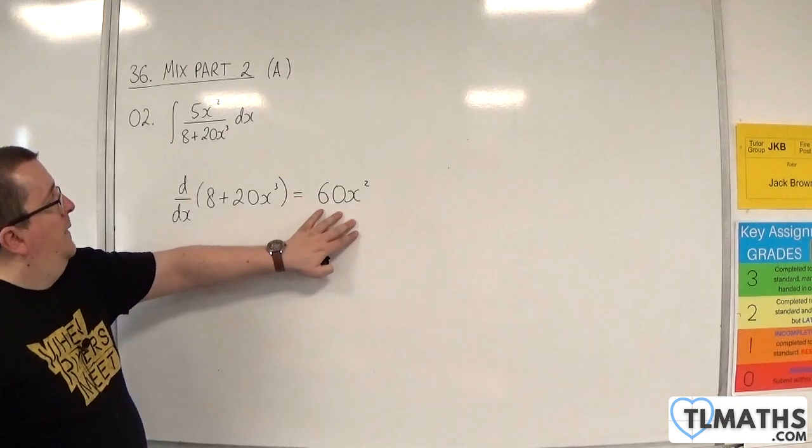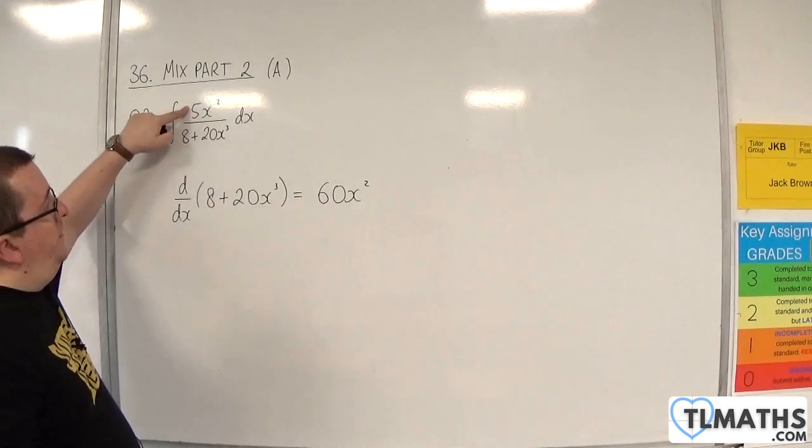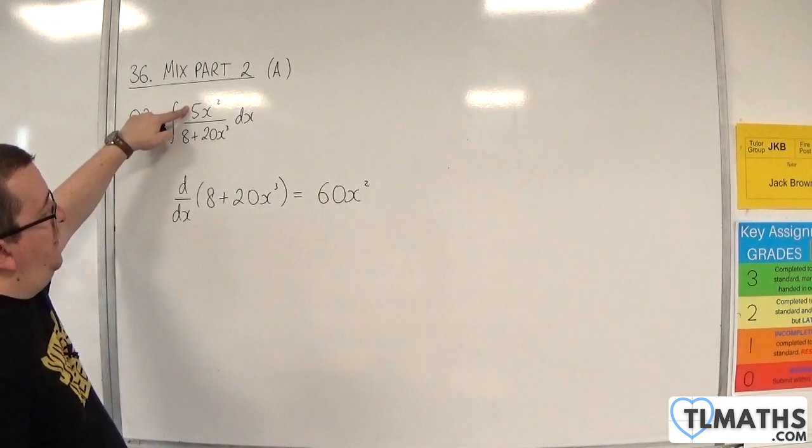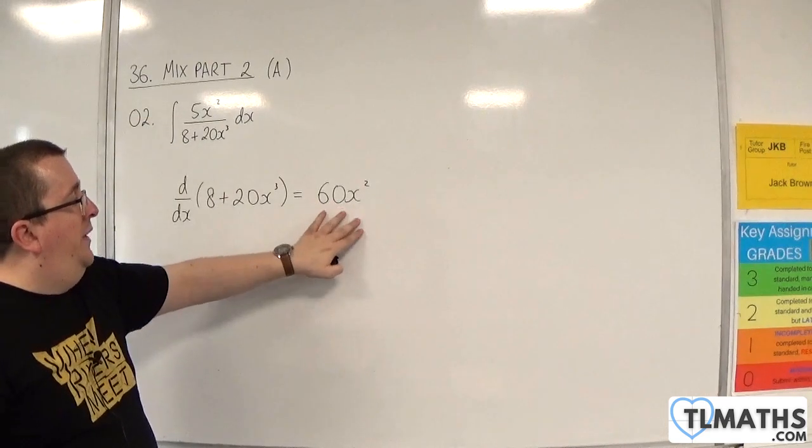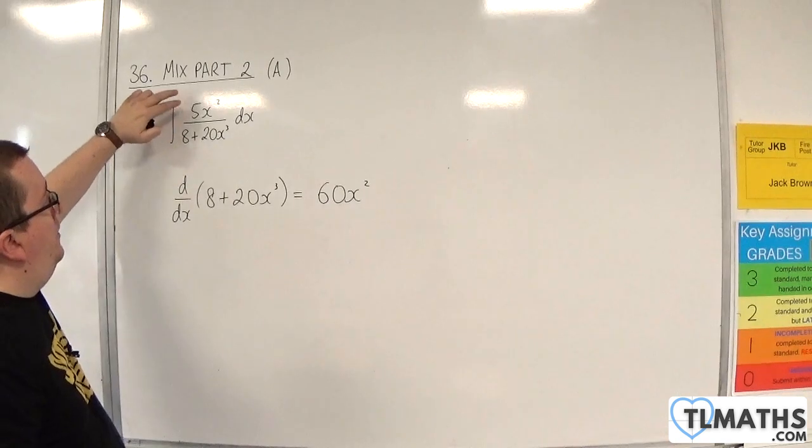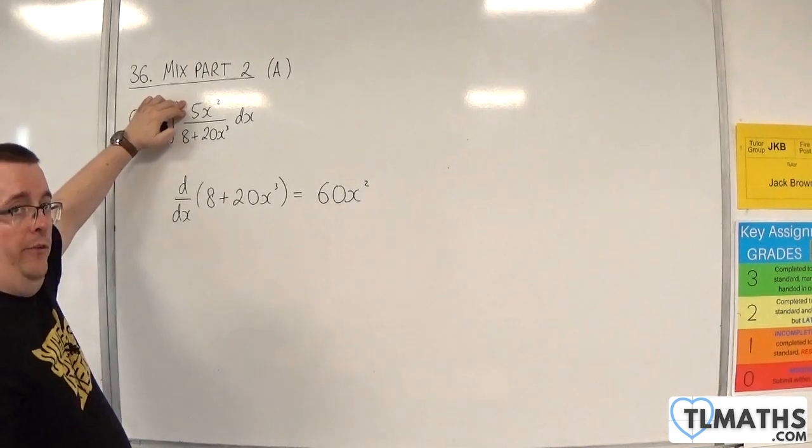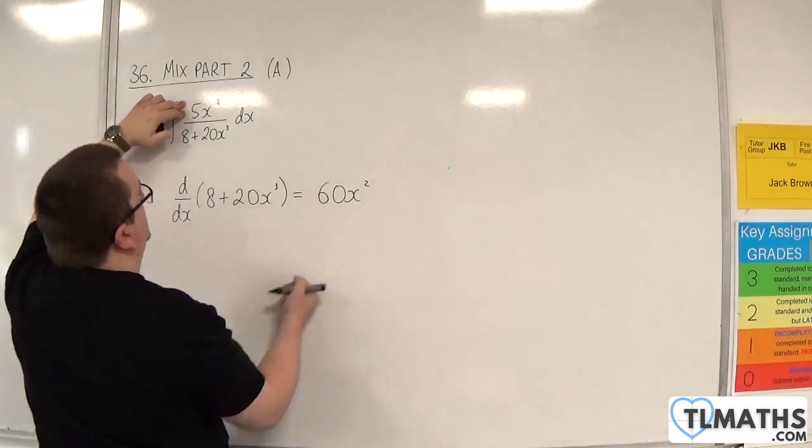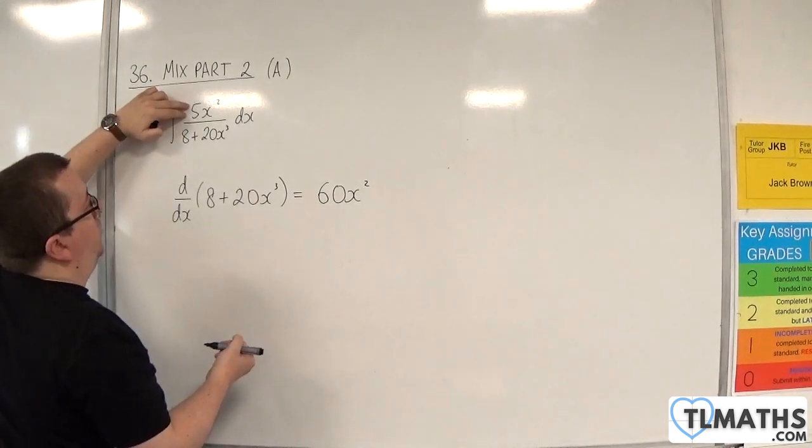Now you look at that and compare it with what you've got in the numerator. Now you'll notice that we've got 60x squared, we've got 5x squared. So we've actually got 1 twelfth of what we need, because 60x squared is 12 lots of 5x squared.